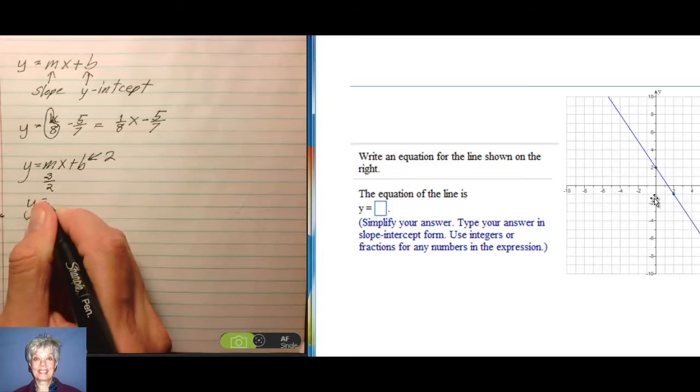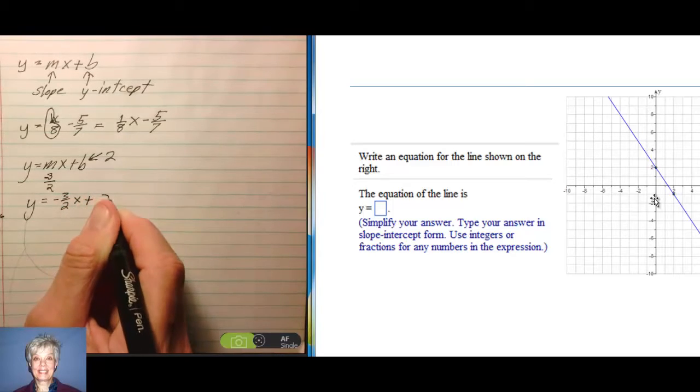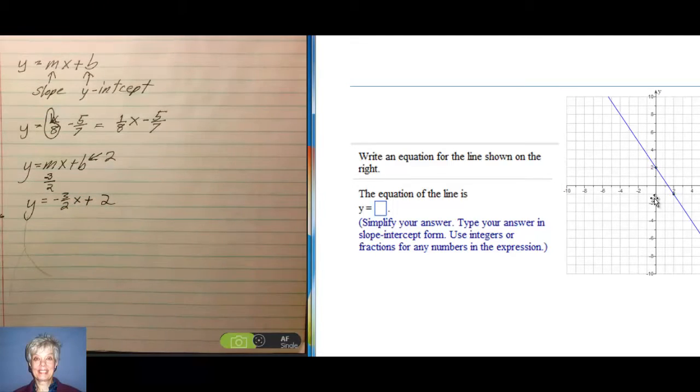So our equation is going to be y equals negative 3 over 2x plus 2, and that would be the answer you would write for this equation. Right here. Okay.